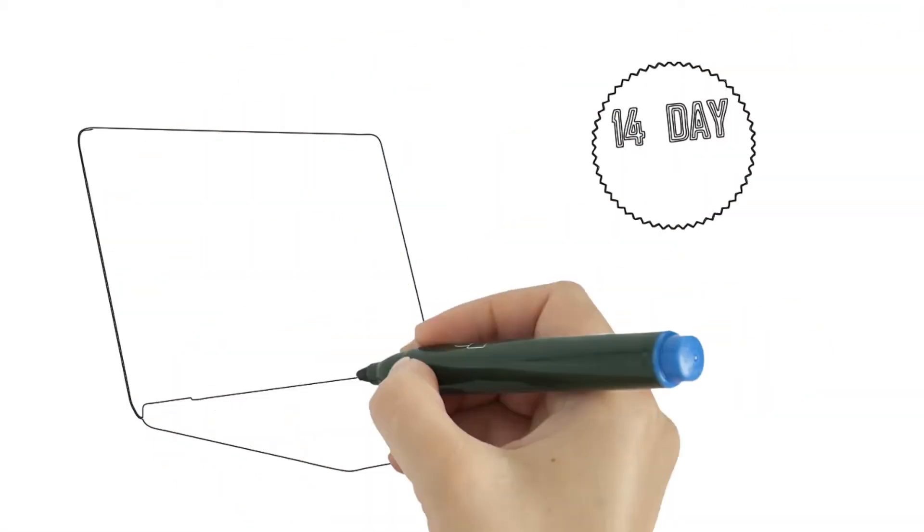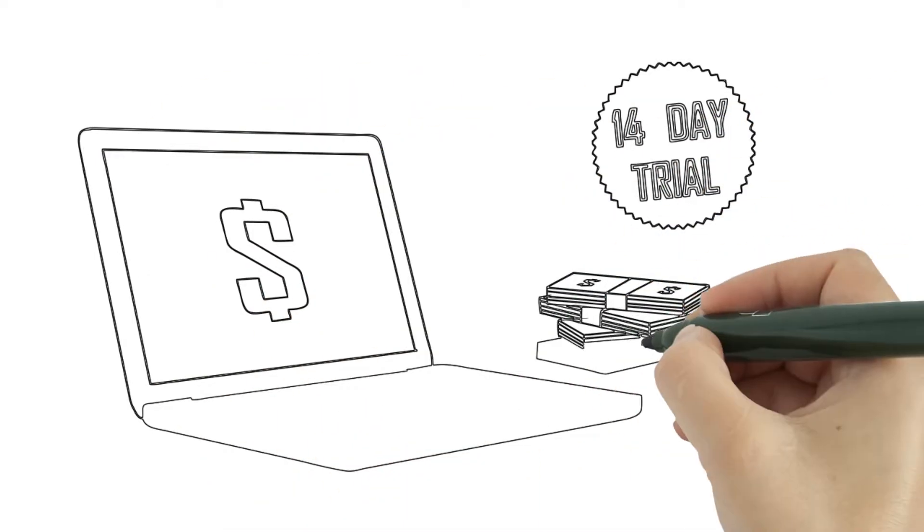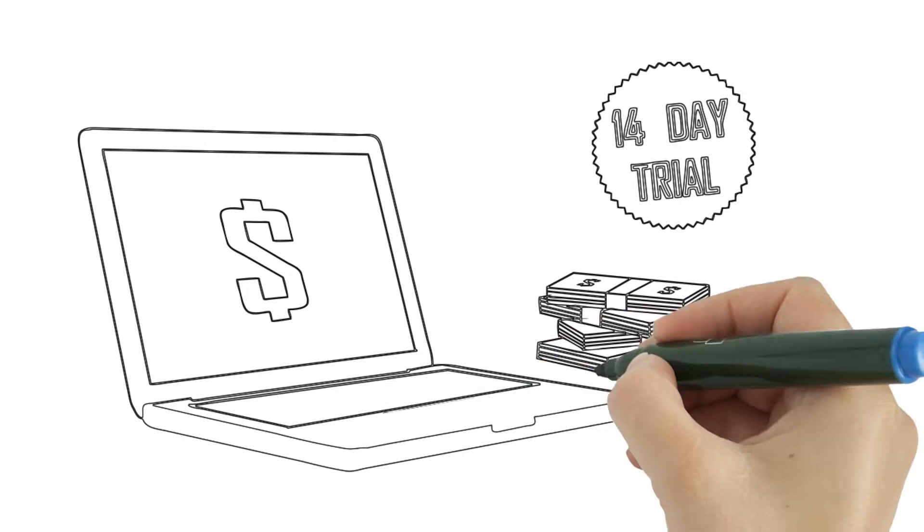By offering parents a 14 day trial of the online Super Learning programs and then having them take a monthly subscription, you can build an ongoing monthly income.